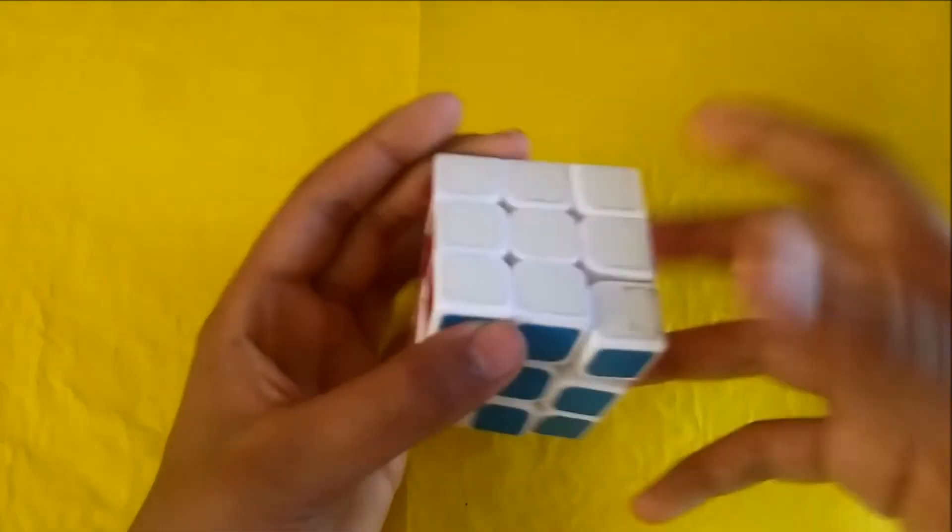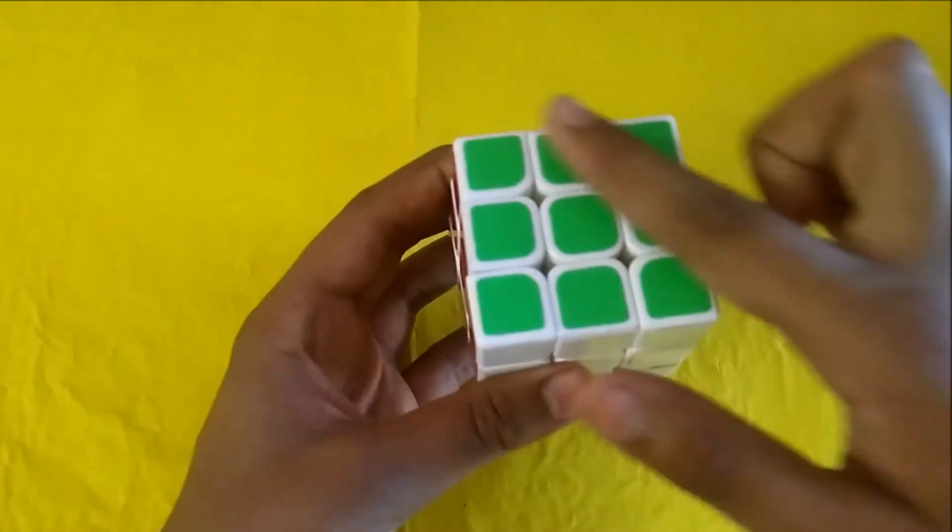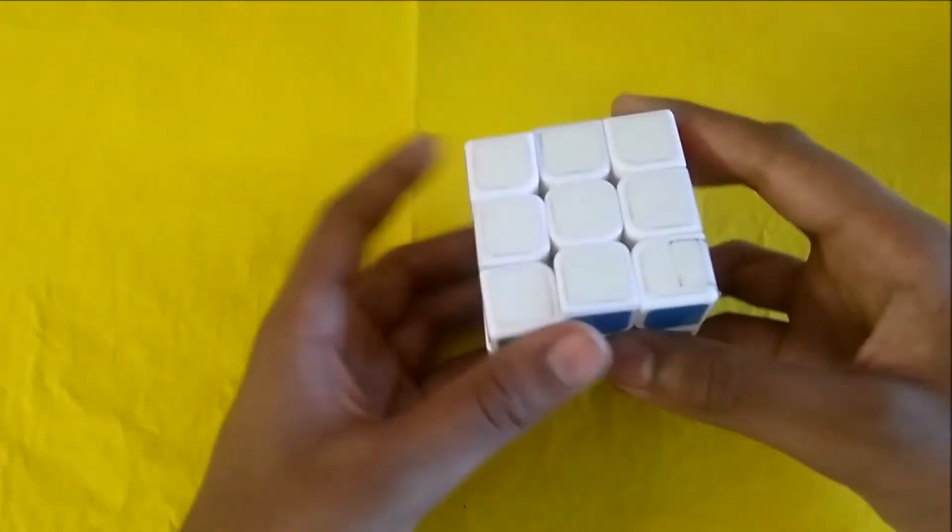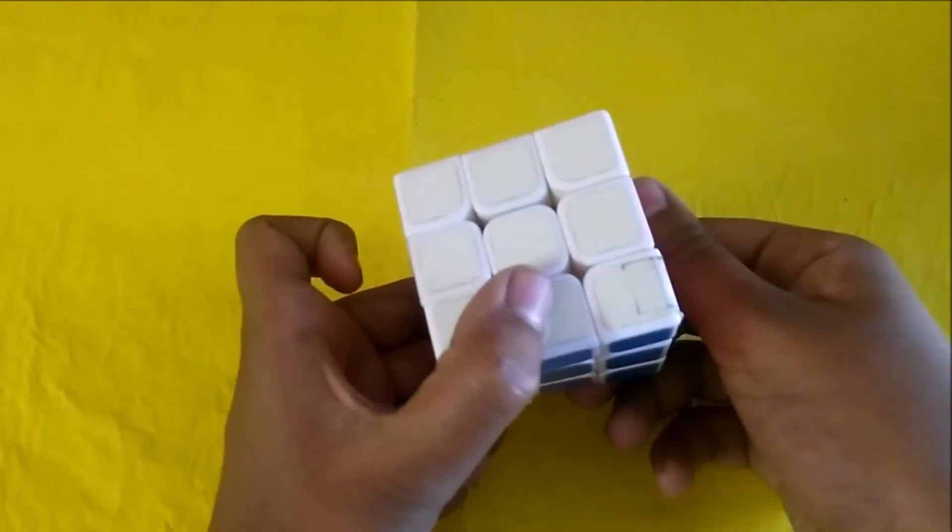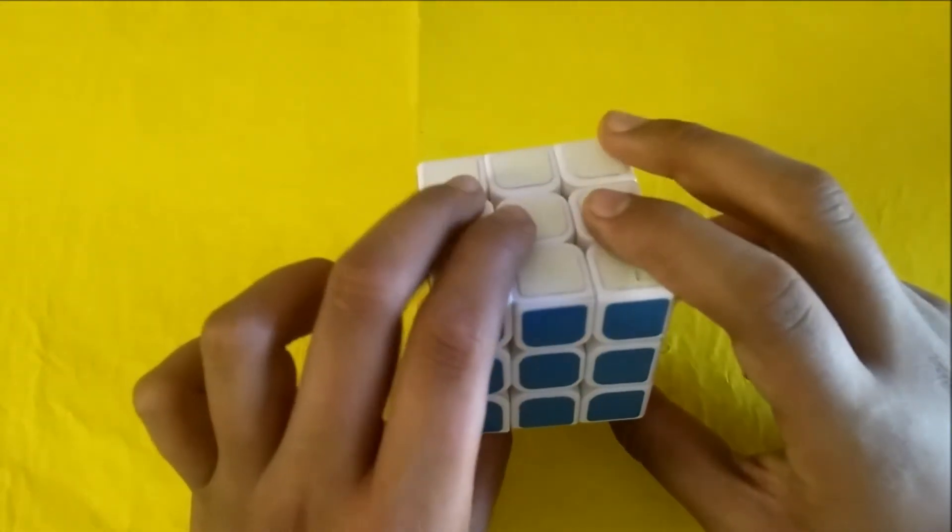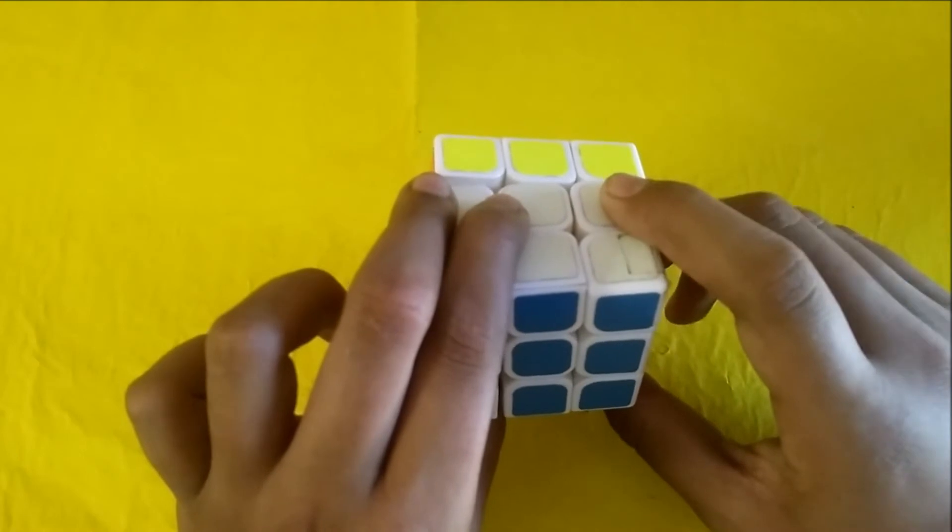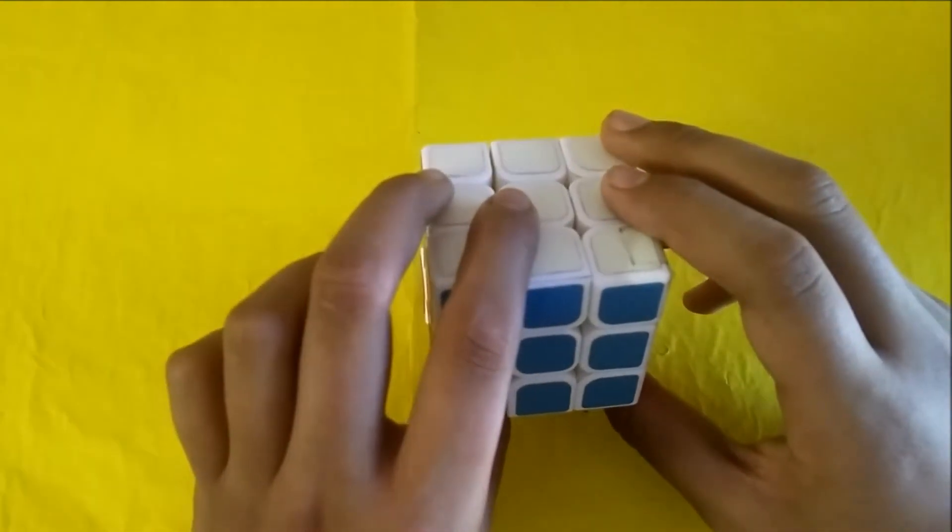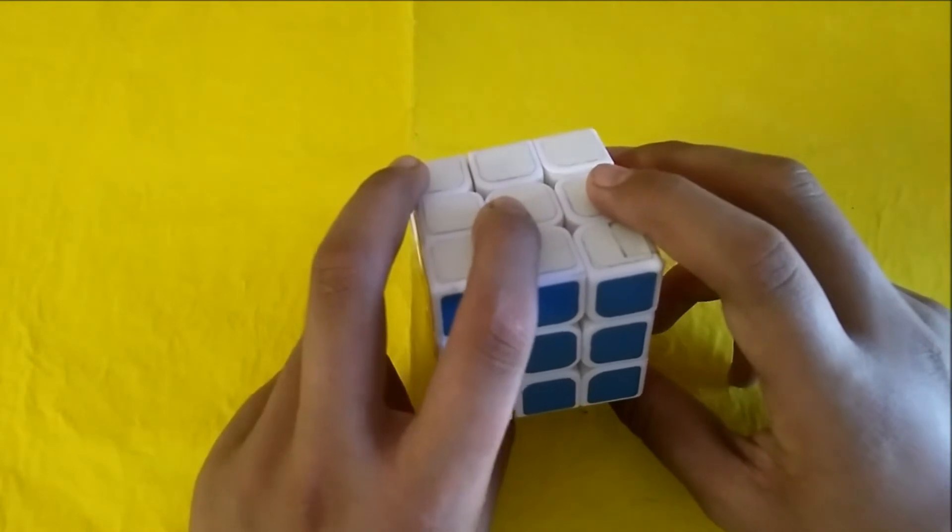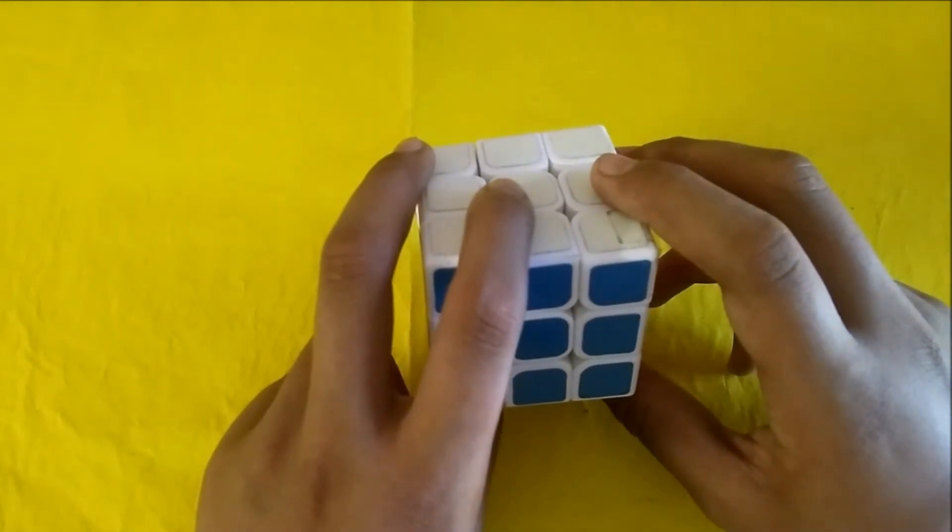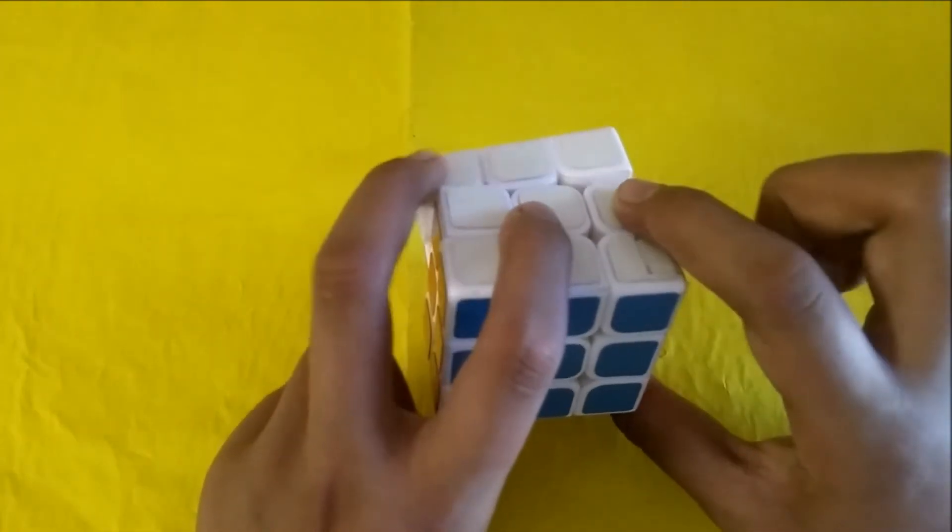And then comes the B one. B is confusing. If this is blue, then at the back it has to be green. In B, you have to just move the last layer like this. If we use B layer, we always do B2. But if sometimes we have to do only B, we are going to turn it clockwise. If we have to do B prime, which is very rarely used, you have to do anti-clockwise.